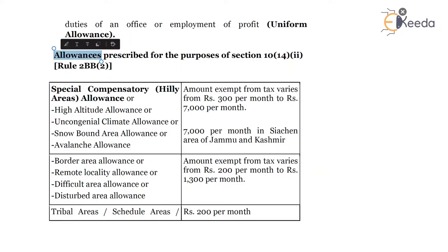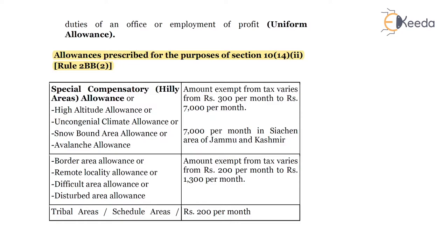Now for section 10(14)(2), which are mentioned under rule 2BB clause 2. In this part, the expenditure incurred won't matter. If the allowance paid by the employer is within the limit prescribed as per rule 2BB, then nothing will be taxable. If it is exceeding the limit, then the employee will get a deduction up to the limit and the amount exceeding the limit will be taxable.